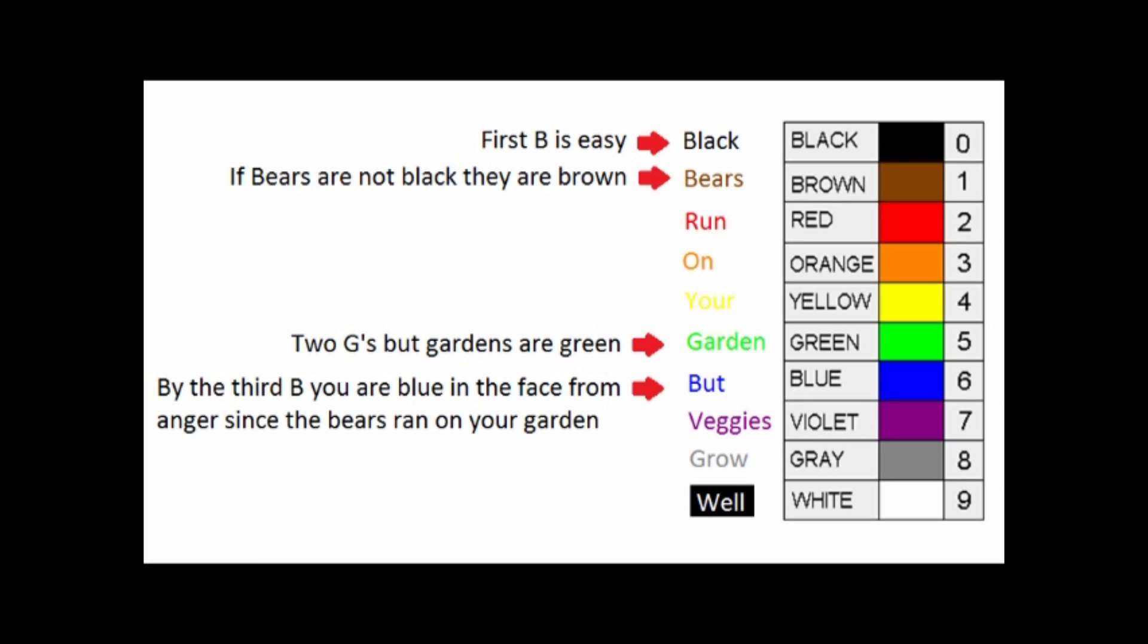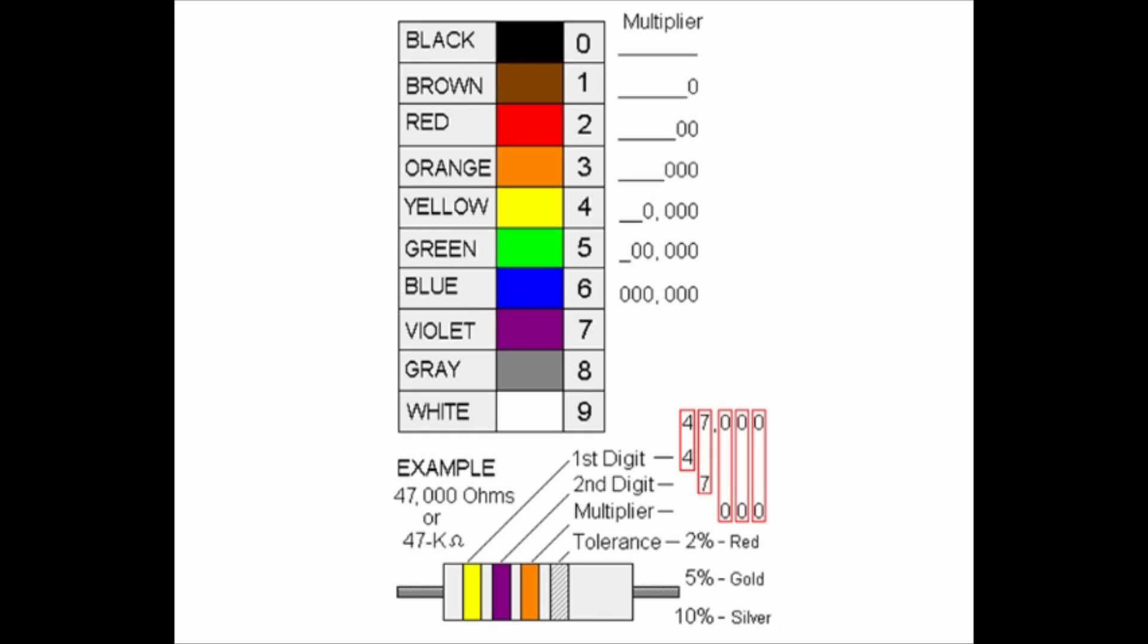Each color represents a value from 0 to 9. An easy way to remember the colors is through the saying black bears run on your garden but veggies grow well. The first and second colors directly represent the numbers from the chart.